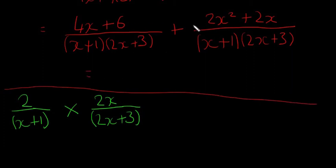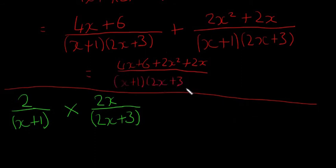So we're just going to squeeze this whole thing in on the top. So it's going to be then 4x+6 plus 2x squared plus 2x, all over one fraction. So this is now we're adding the two fractions together, (x+1) and (2x+3).